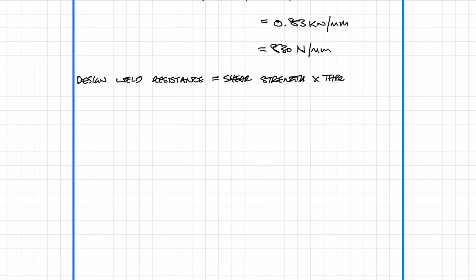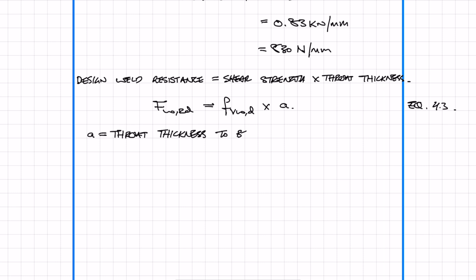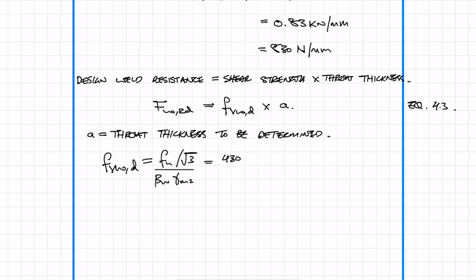Now we need to work out the design weld resistance, and that's simply the shear strength times by the throat thickness. FU is the nominal ultimate tensile strength of the weaker part of the joint. Beta W is the appropriate correlation factor taken from table 1. Gamma M2 is the material safety factor taken from table 2.1.